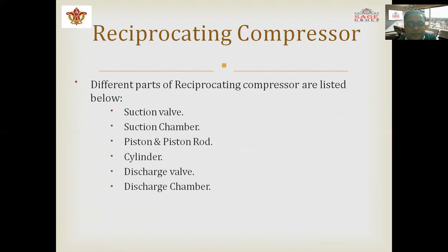The suction valve is used for drawing air from the atmospheric side into the engine cylinder. The suction chamber is where air is drawn into the engine cylinder. The piston is an integral part of the cylinder where movement takes place from the top and bottom side. The piston rod connects the piston to the crankshaft. The discharge valve delivers the compressed air after compression; when the valve is open, the air is delivered to the other side.